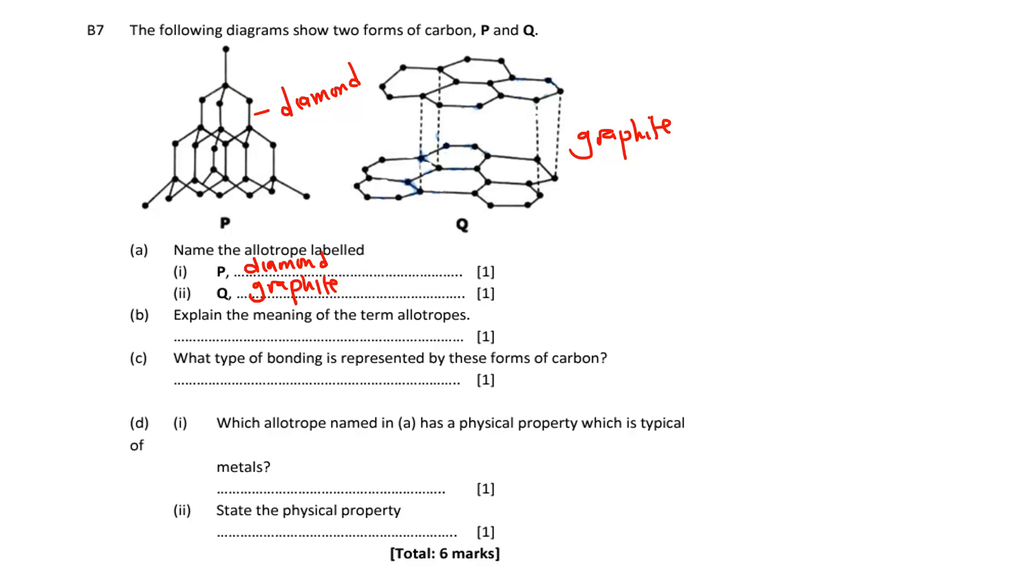It also has a density of 3.5 grams per cubic centimeter. It does not conduct electricity. So those are the physical properties of diamond. The other thing you should know: what is the use of diamond? Put that in the comment section and everyone will be able to learn. Now we shift our attention to graphite.